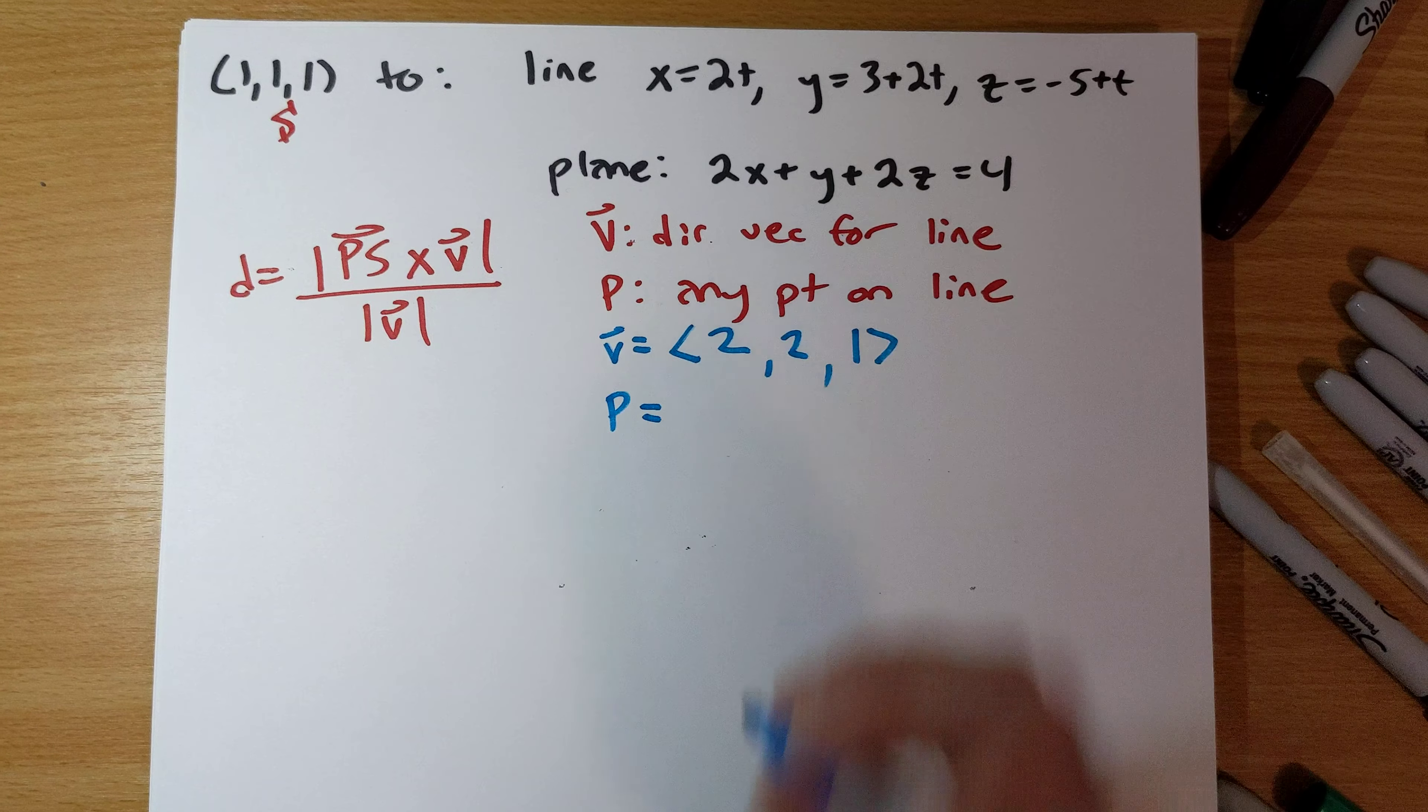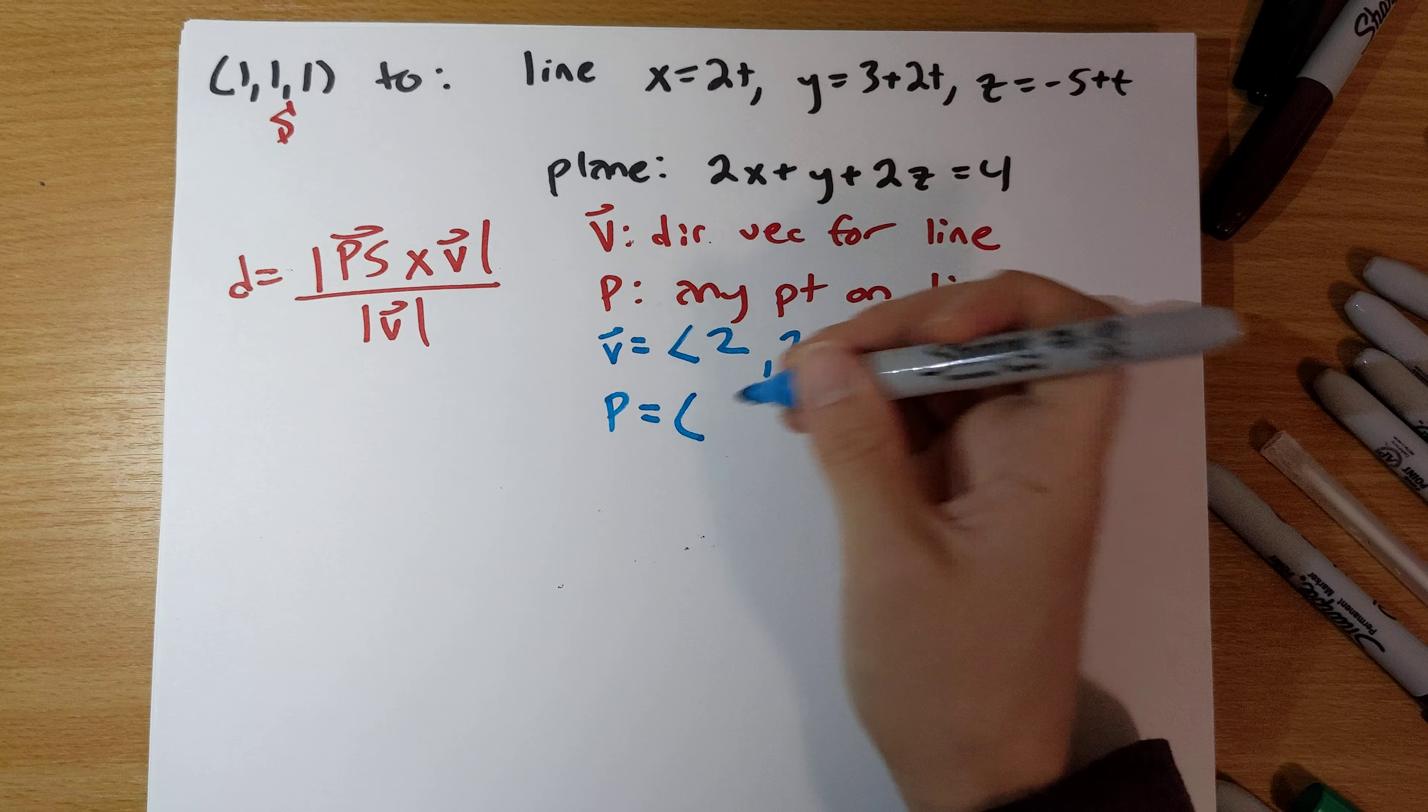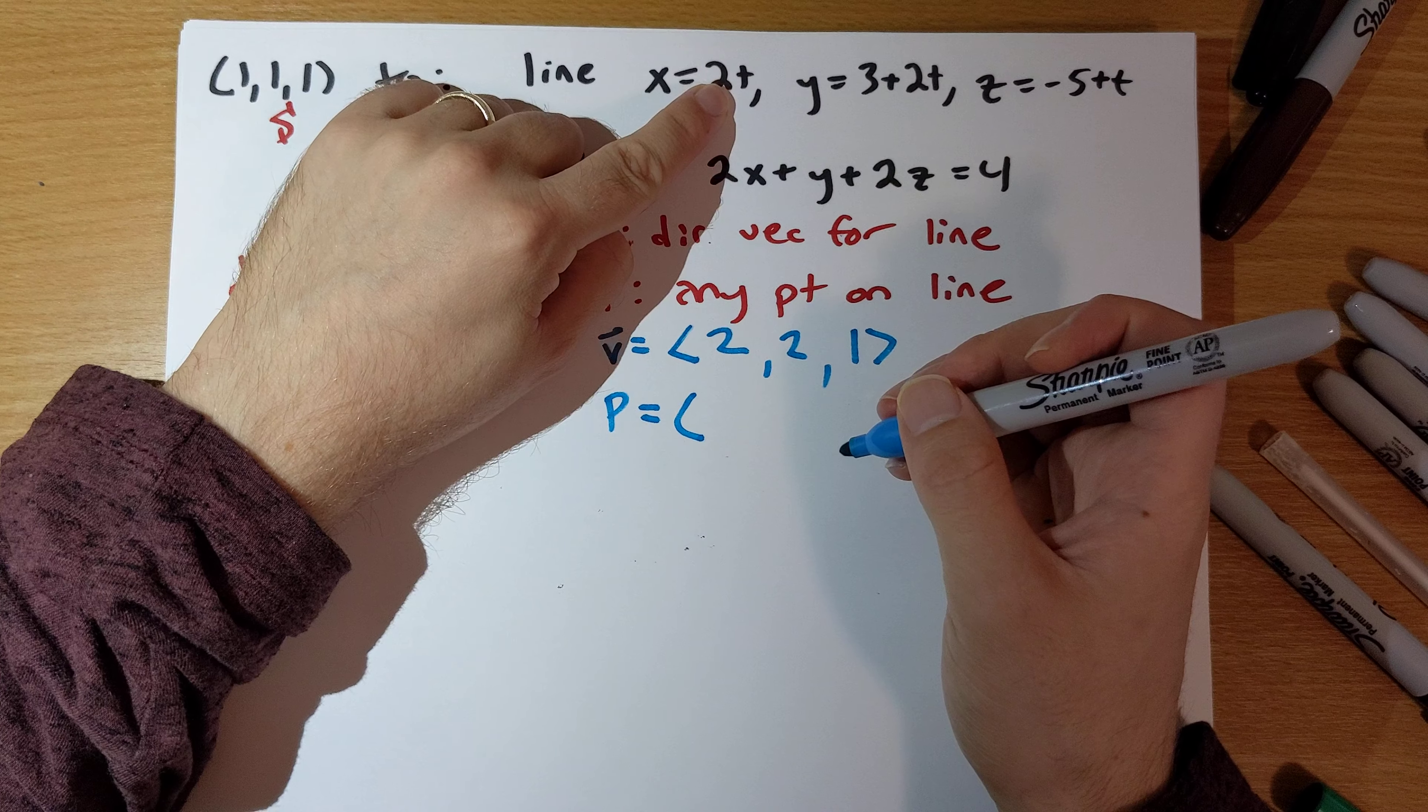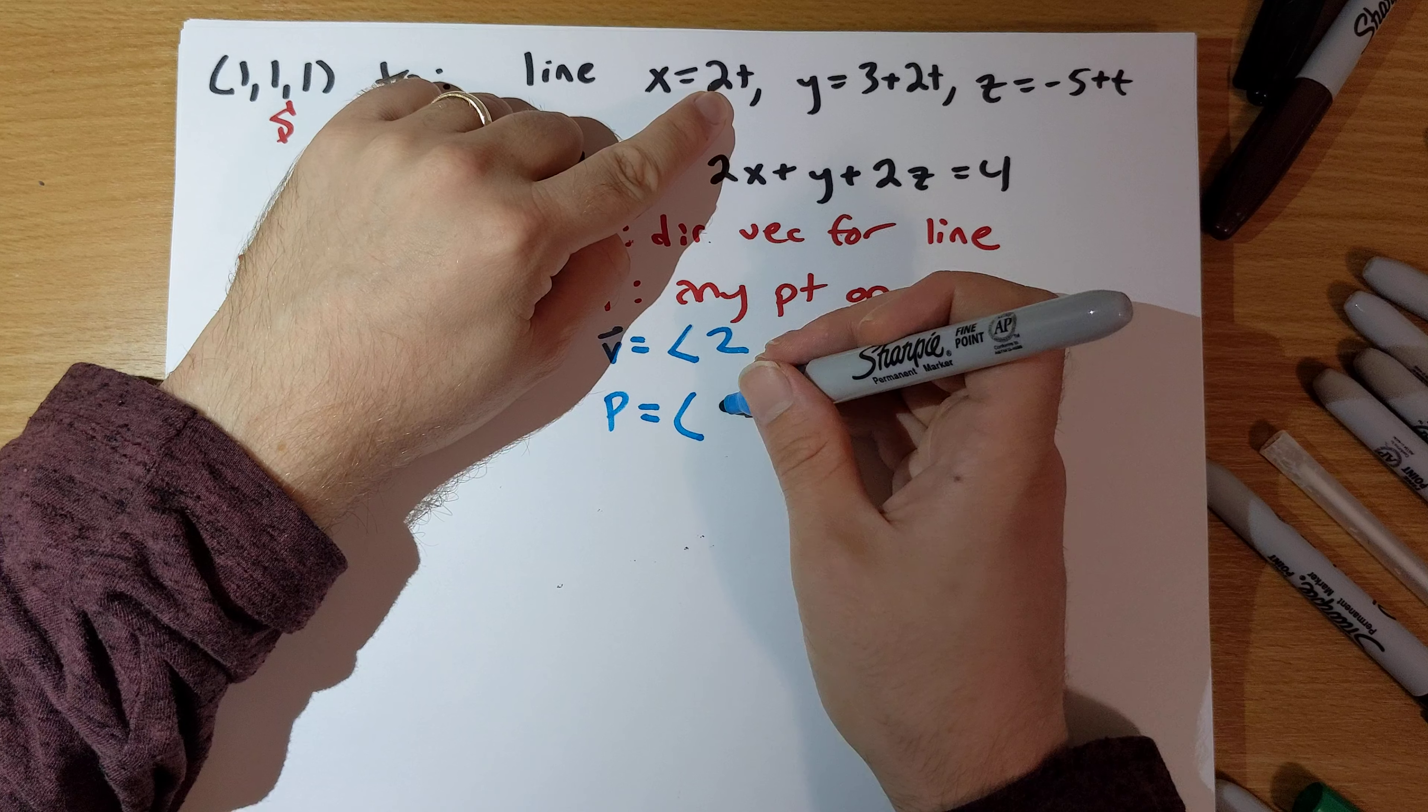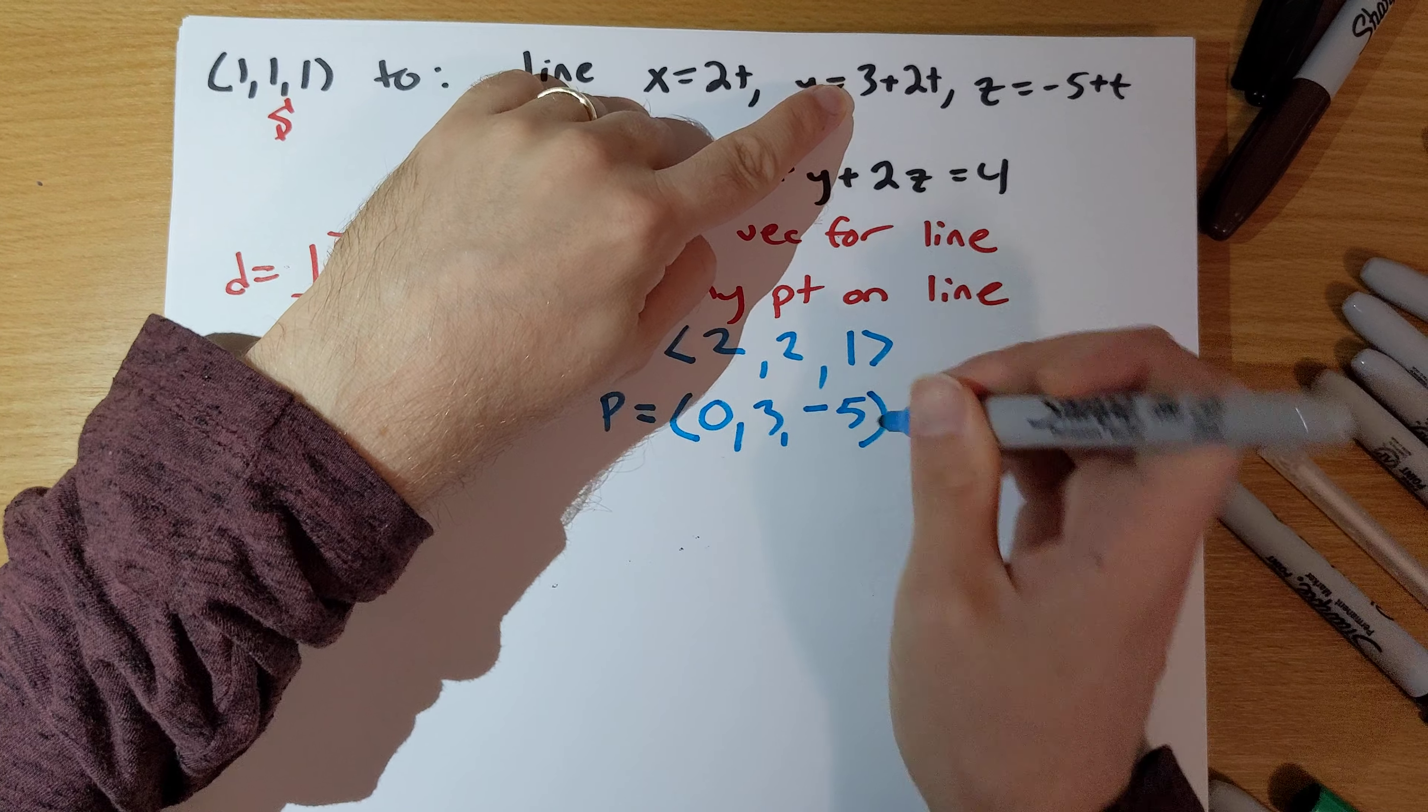For p, p can be any point on the line, we just have to substitute in the value of t here. I think it's easiest if we do t equals 0, but you might choose something else. So, we substitute in t equals 0, we get 0, 3, and negative 5.